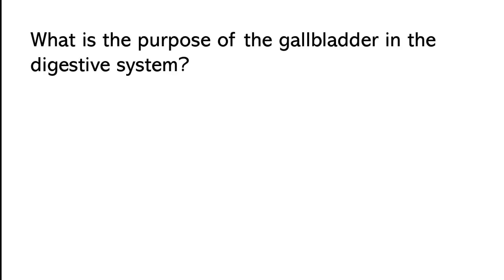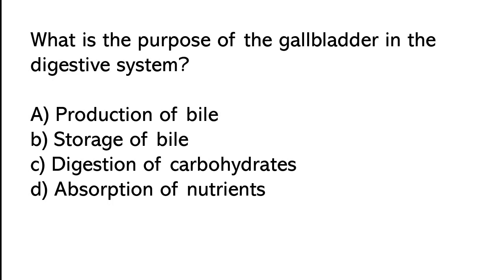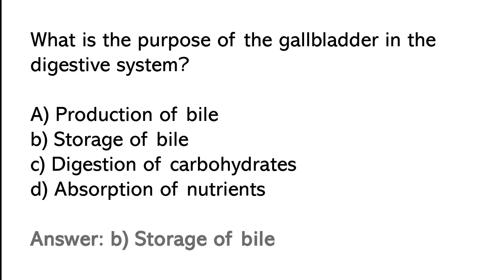What is the purpose of the gallbladder in the digestive system? Production of bile, Storage of bile, Digestion of carbohydrates, Absorption of nutrients. So the correct answer is option B. Storage of bile is the purpose of the gallbladder in the digestive system.